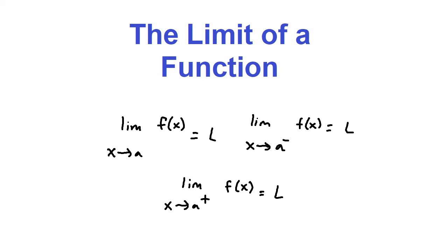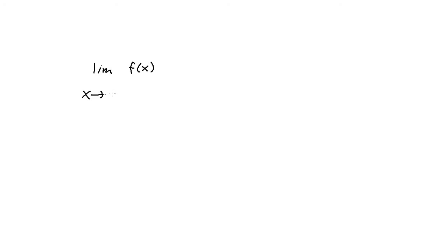Let's take a look at the limit of a function. The proper notation for the limit is: the limit of some function f of x as x approaches some x value a equals a y value L. Basically with limits, we're trying to find what y value L the graph of f of x approaches as x approaches some x value a.